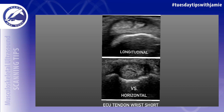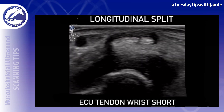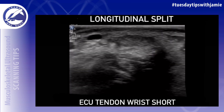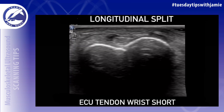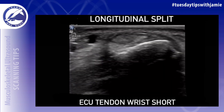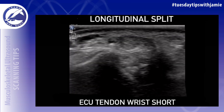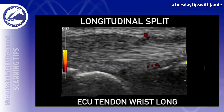It is considered full thickness when the split extends entirely from one surface of the tendon to another. It is easier to visualize the split tear in the short axis first and then turn the transducer 90 degrees to elongate the tear and better visualize it in the long axis. It is not unusual for the split to not be seen in the long axis because it blends in too much.